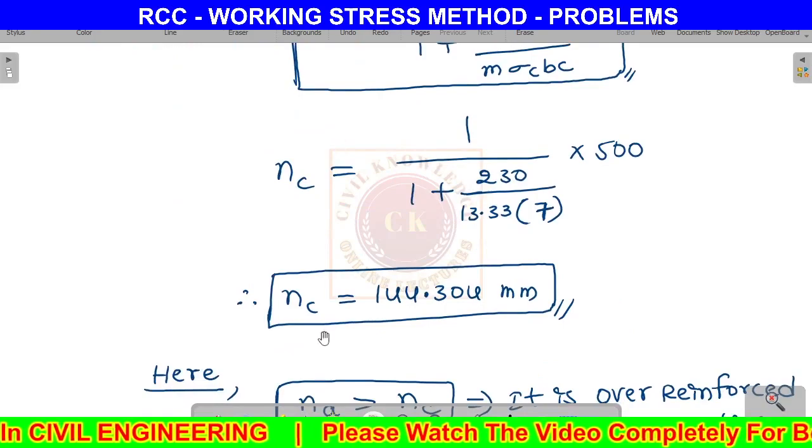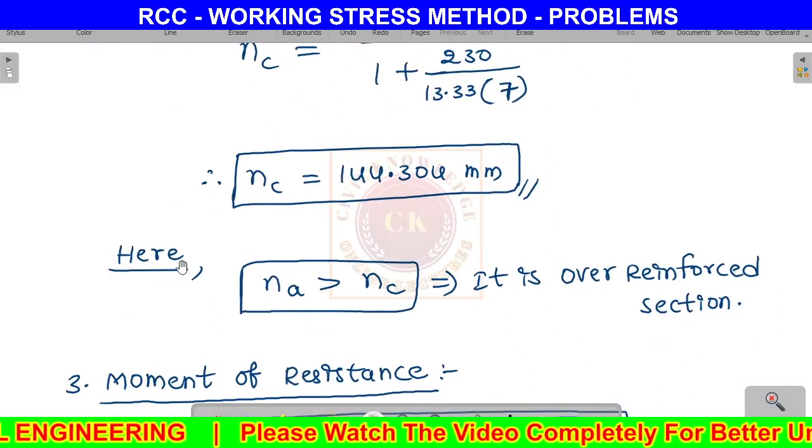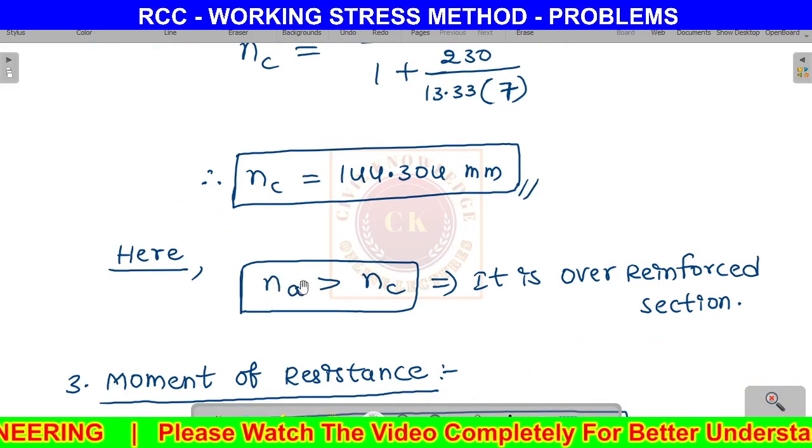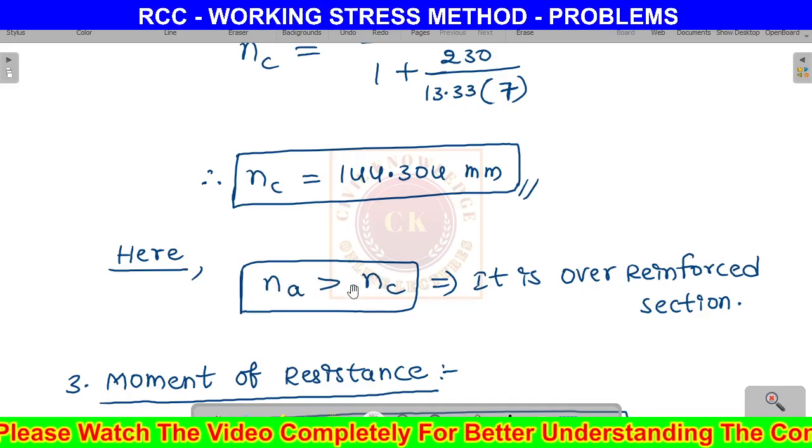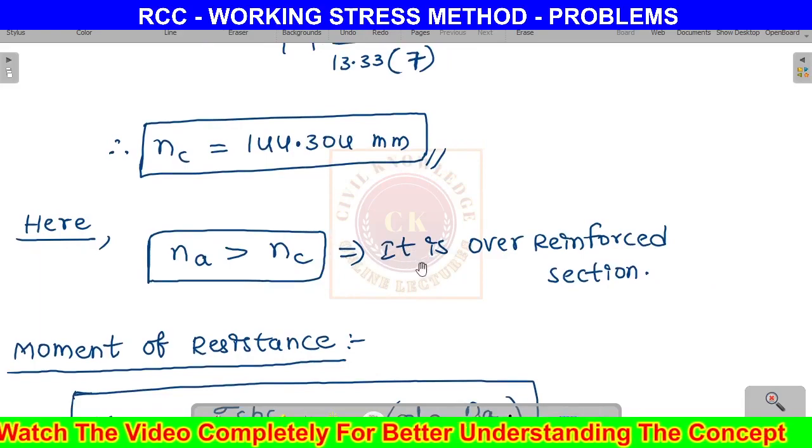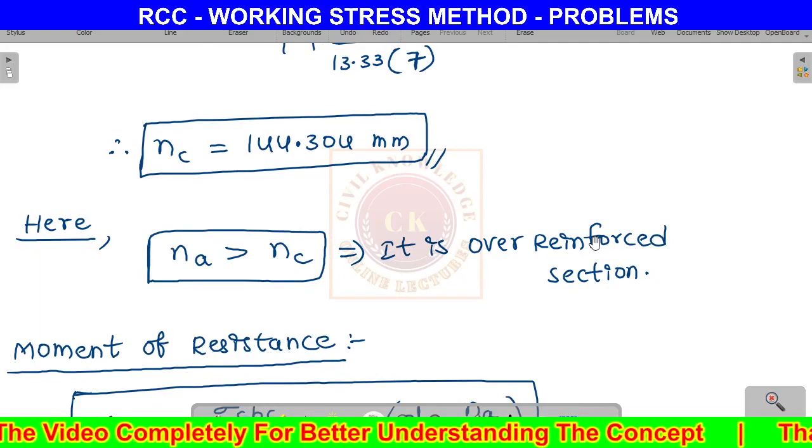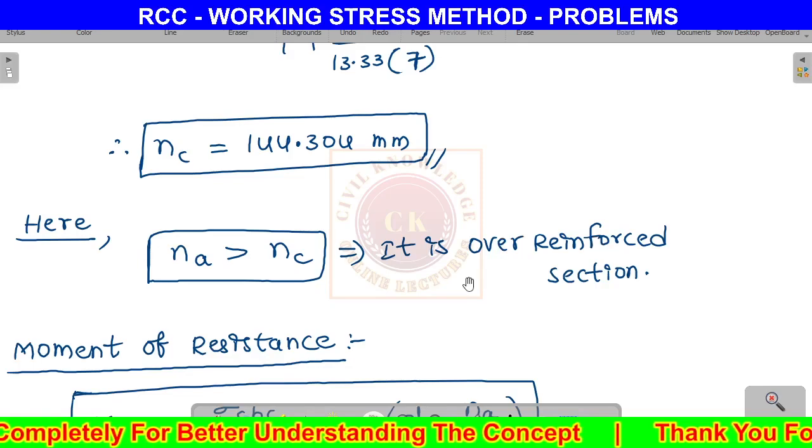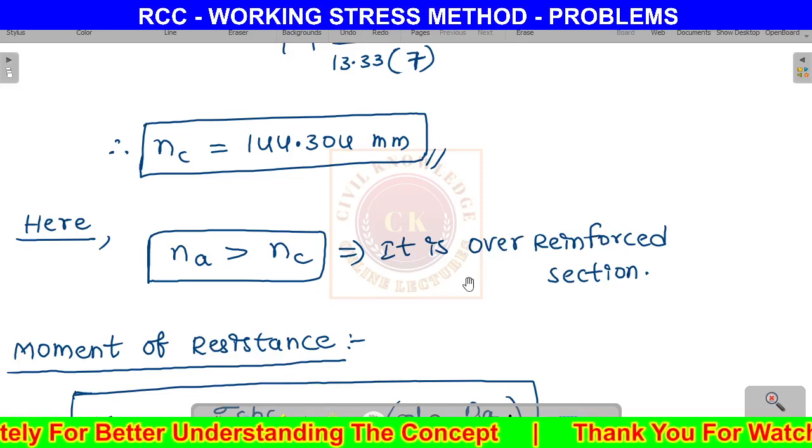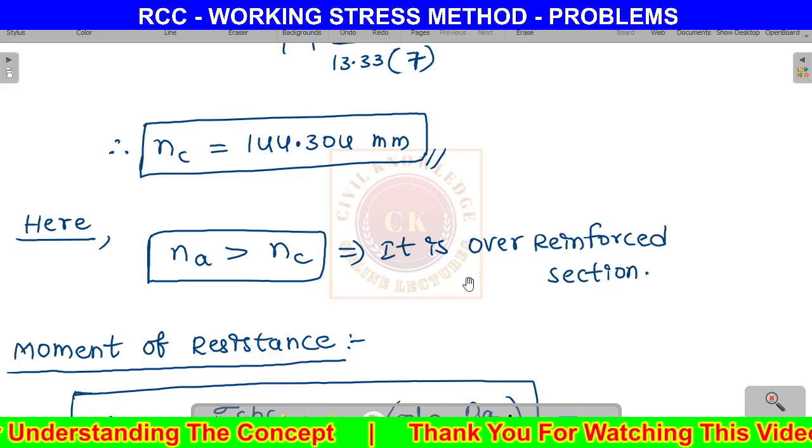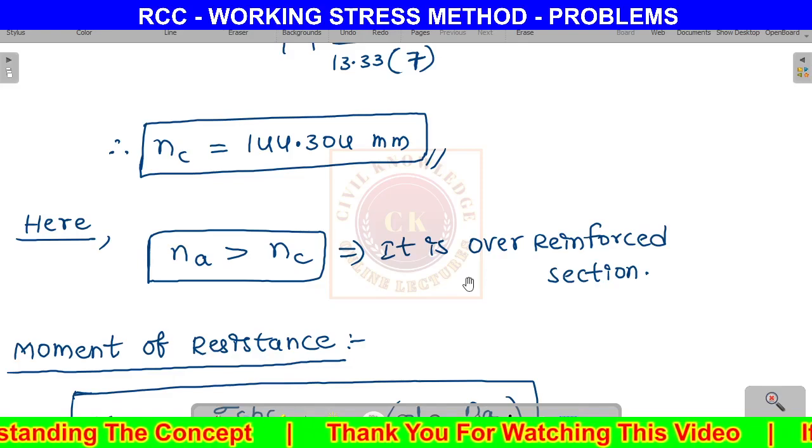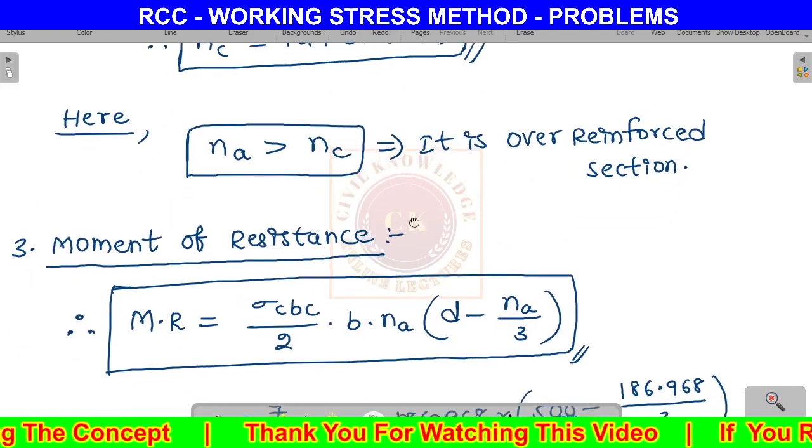Now compare actual depth and critical depth of neutral axis. Since na is greater than nc, this is an over-reinforced section.